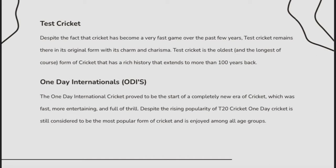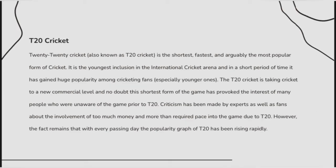When it comes to T20 cricket, that is 20-20 cricket, it is 20 overs played by one team and 20 overs by another team. It is the shortest, fastest and arguably the most popular form of cricket. It is the youngest inclusion in the international cricket arena and in a short period of time, it has gained huge popularity among cricketing fans, especially the younger ones. T20 cricket is taking cricket to a new commercial level, provoking the interest of many people who were unaware of the game prior to T20.